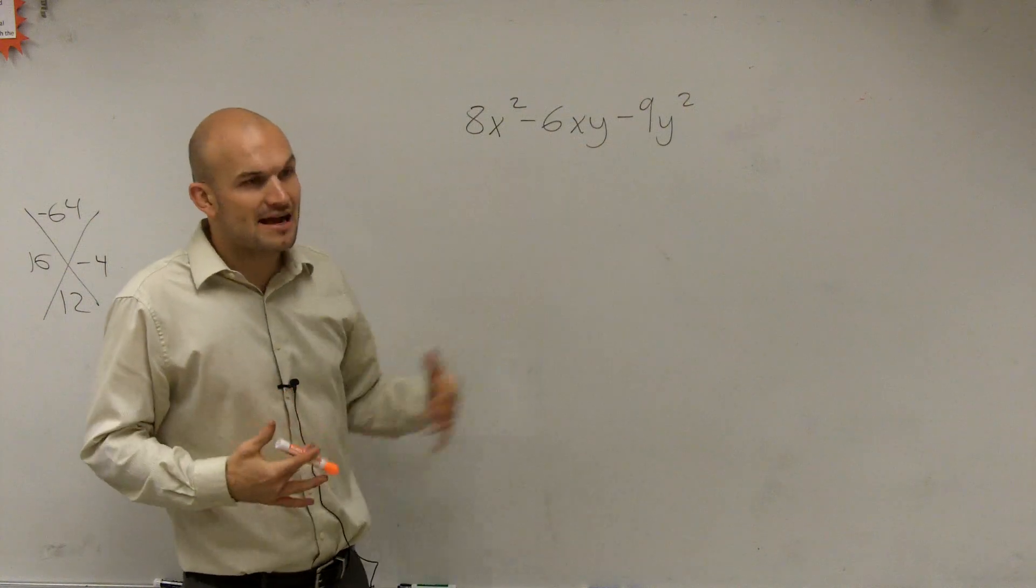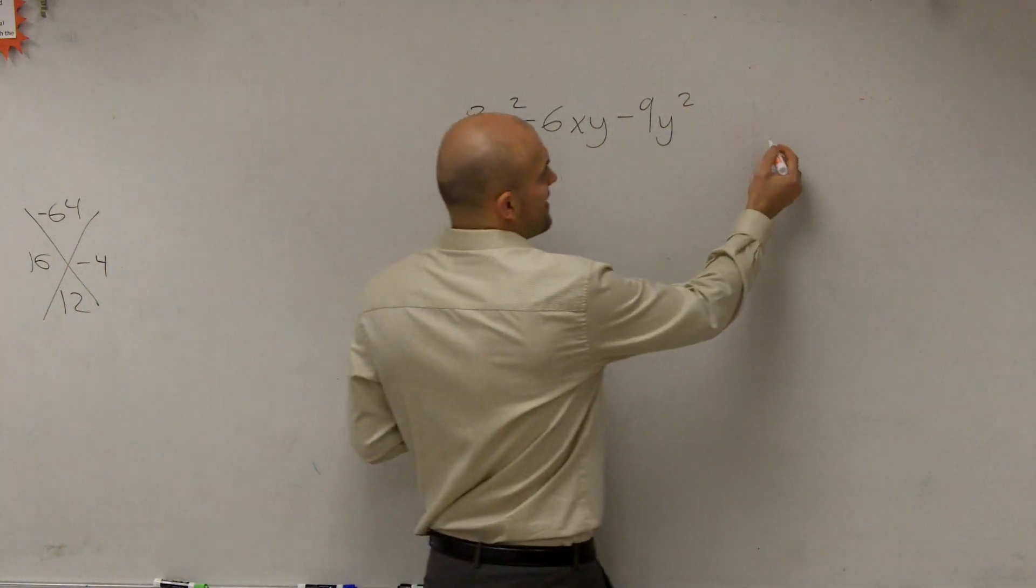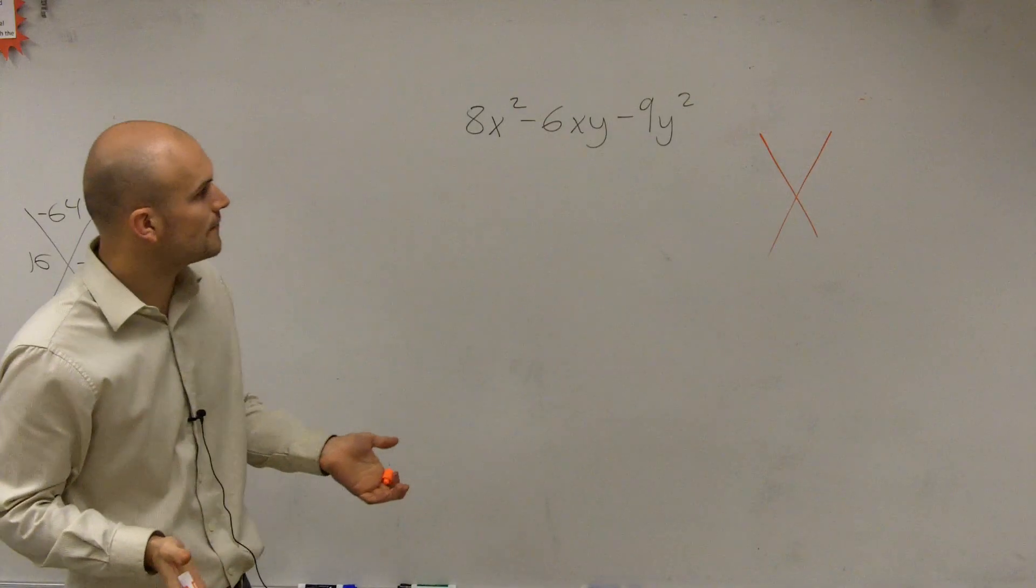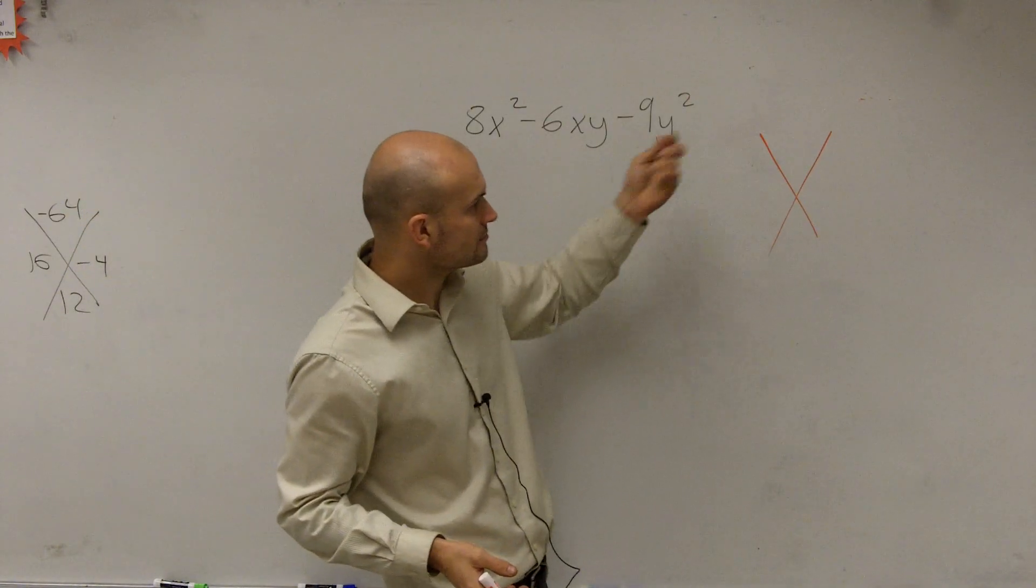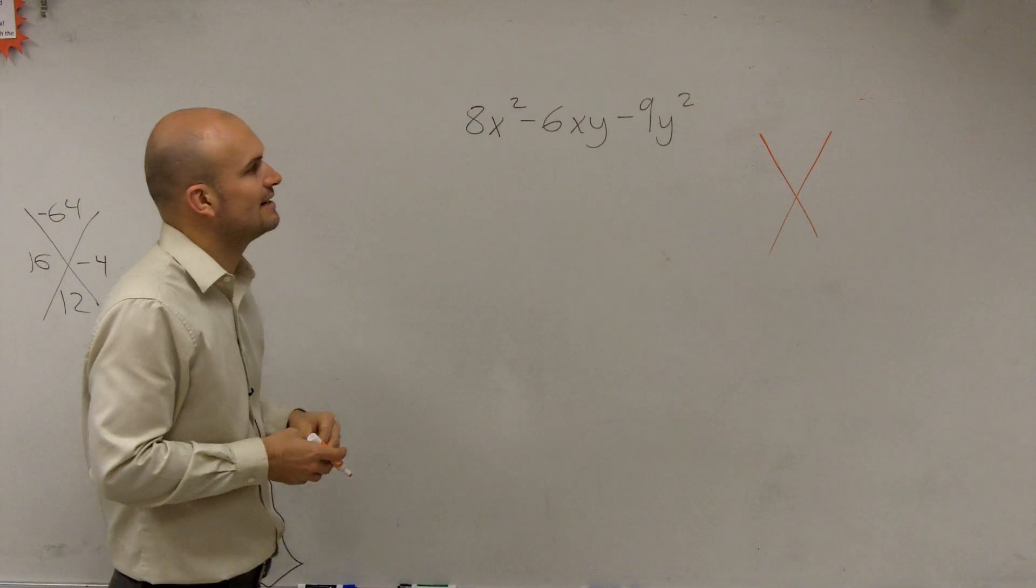So we want to factor this out. And remember, guys, when we have factored, a lot of times we use the diamond to help us out. And we'd say, what two numbers multiply to give us negative nine,